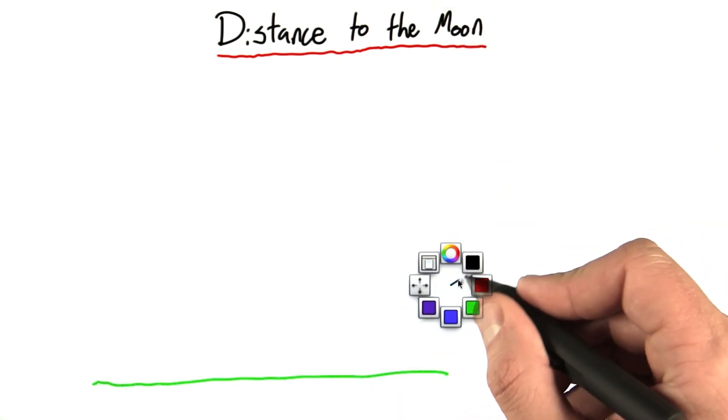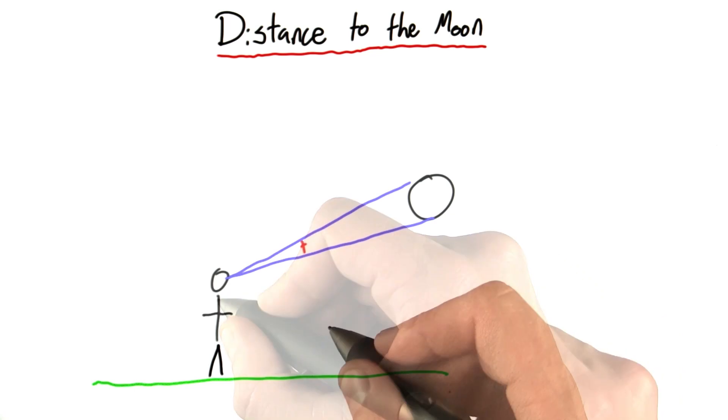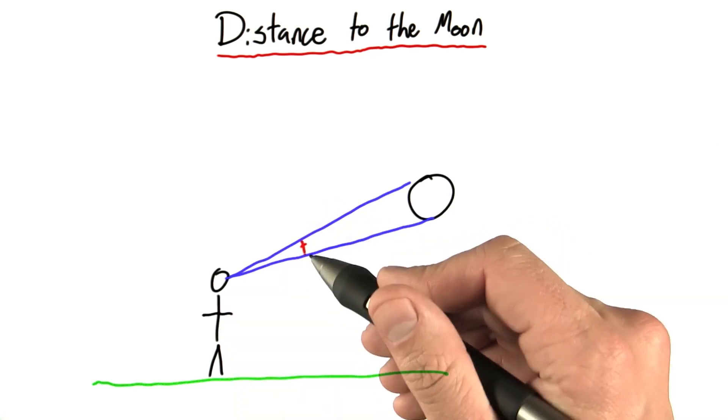So in the last problem, we talked about the angular size of the moon. And we said that the moon has an angular size of half a degree.